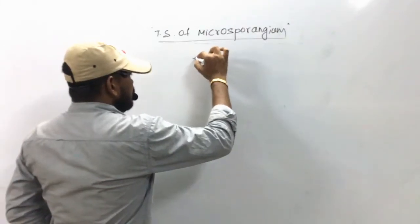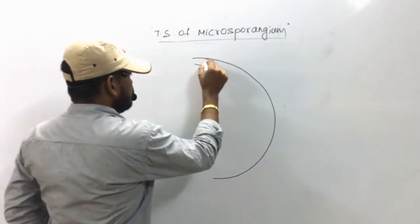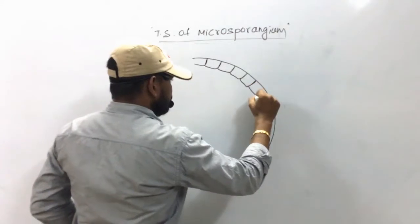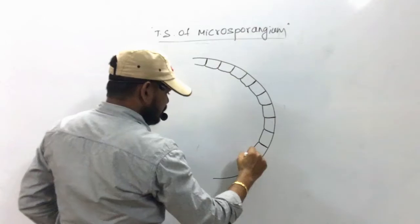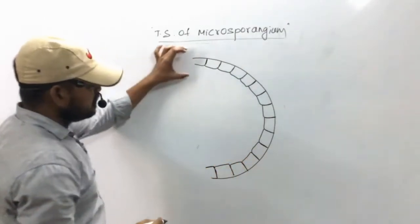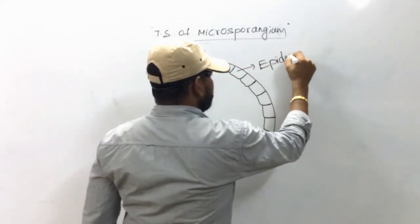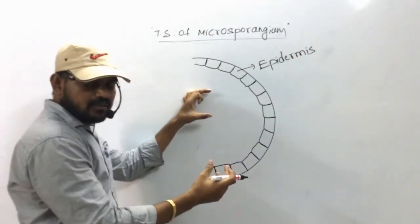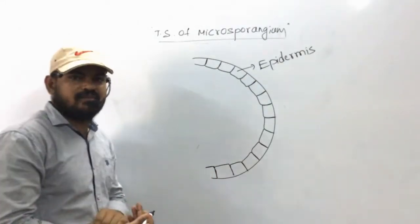The outermost layer of microsporangium is called the epidermis. The cells are rectangular in shape, closely associated without intercellular space. The epidermis is involved in protection as well as the dehiscence of the anther.